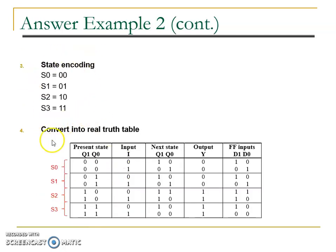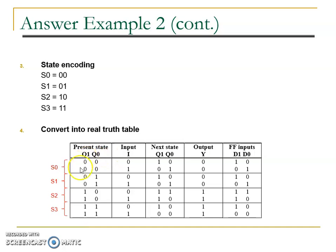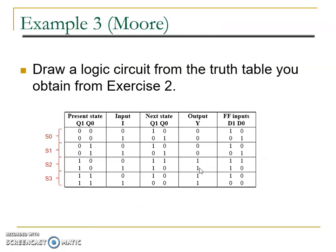Now convert into the real truth table. This table is still not complete because S0 is just the name of the state. S0 is actually 0,0. Since every state has 2 bits, we name the bits Q0 and Q1. So this is a complete truth table.